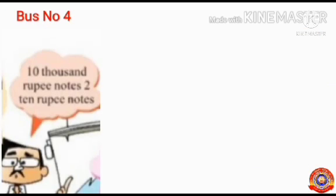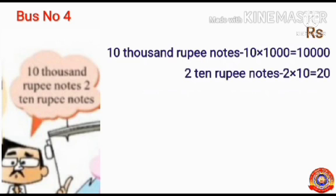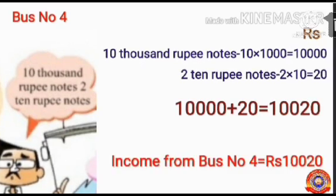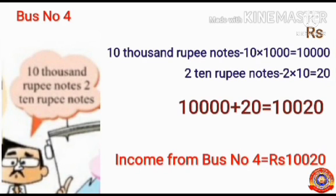Next, let's find out the income from bus number 4. Bus number 4 got 10 one-thousand rupee notes and 2 ten-rupee notes. For 10 one-thousand rupee notes: 10 × 1,000 = 10,000. For 2 ten-rupee notes: 2 × 10 = 20. Then, add these amounts: 10,000 + 20 = 10,020. So the income from bus number 4 equals ₹10,020.